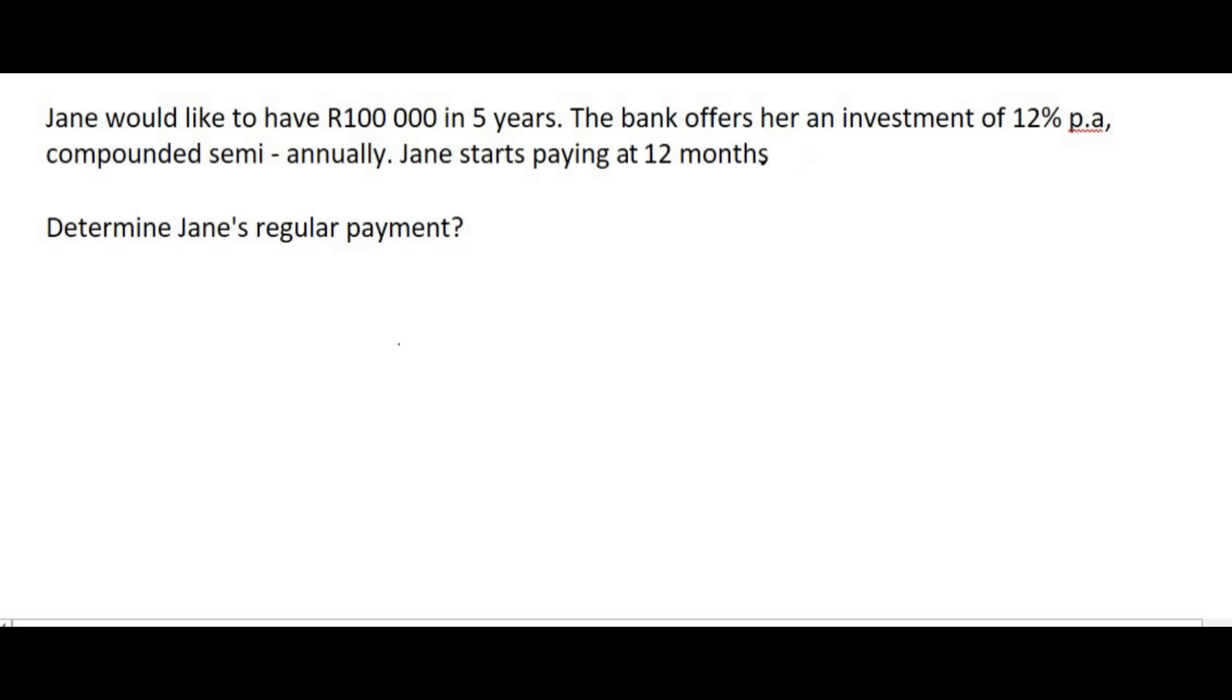We need to look for a few key words or key features. The R100,000, does Jane want that money now or in five years? Well, it's in five years, that's the future. And then the compounding is semi-annually. And then she starts paying after 12 months.